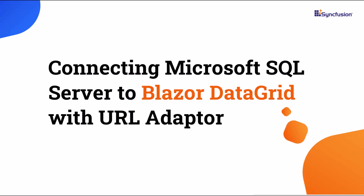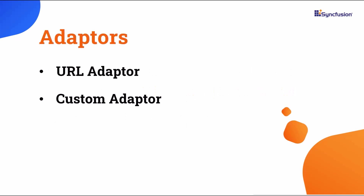Welcome to the Blazor Data Grid tutorial. In this video, I will show you how to connect Microsoft SQL Server data to the Syncfusion Blazor Data Grid component. There are several ways to bind data to the data grid, such as using the data source property or the custom adapter. However, in this video I will specifically focus on remote data binding with a URL adapter.